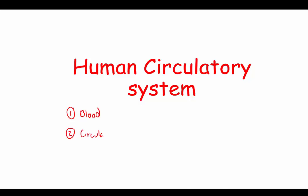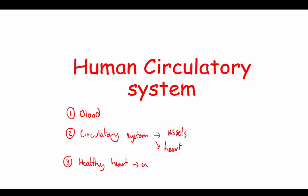Good morning. In this video we're going to look at the human circulatory system. There are a few parts to this: there is blood, there is the circulatory system itself — which can be split into two parts: the blood vessels and the heart — and then the last part is basically about a healthy heart, so it's all to do with exercise and disease.